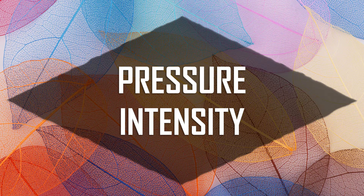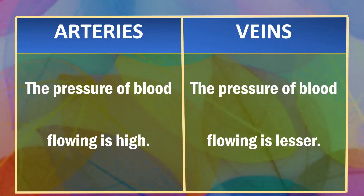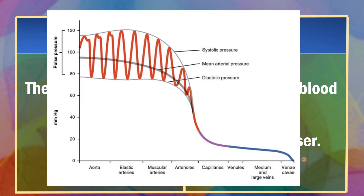Now, let's differentiate these vessels on the basis of pressure intensity. The pressure of blood flowing is very high in arteries, while the pressure of blood flowing is much lesser in veins. In this graph, you can see how the pulse pressure slowly reduces as blood moves from the arteries to the capillaries to the veins.